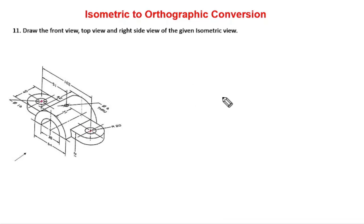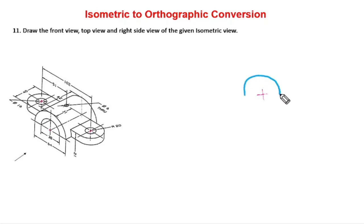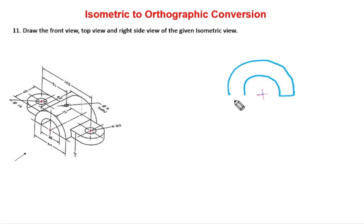Now let me look at the right side view and left side view. First I am going to mark the center here. The semicircle radius is 38, so I can see that semicircle in the front view. I am going to draw that semicircle by taking 19 mm on the compass. Then with the same center, 30 mm on the compass to draw the larger arc. I can join these lines like this.